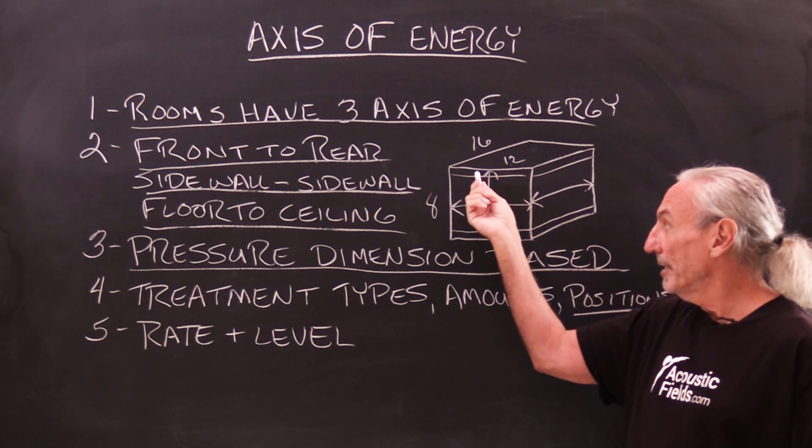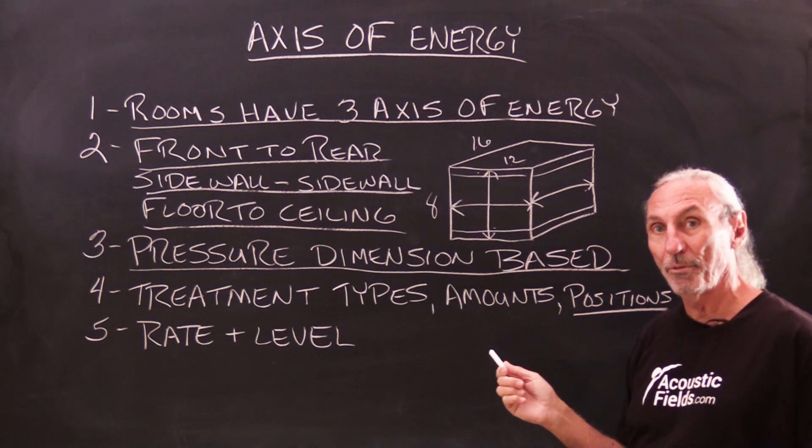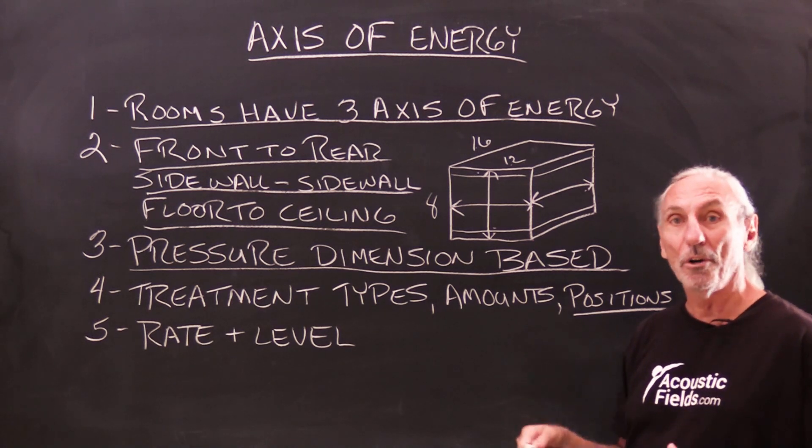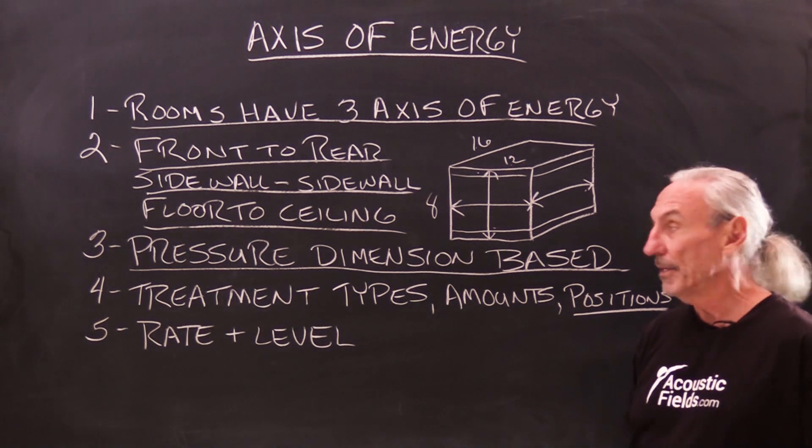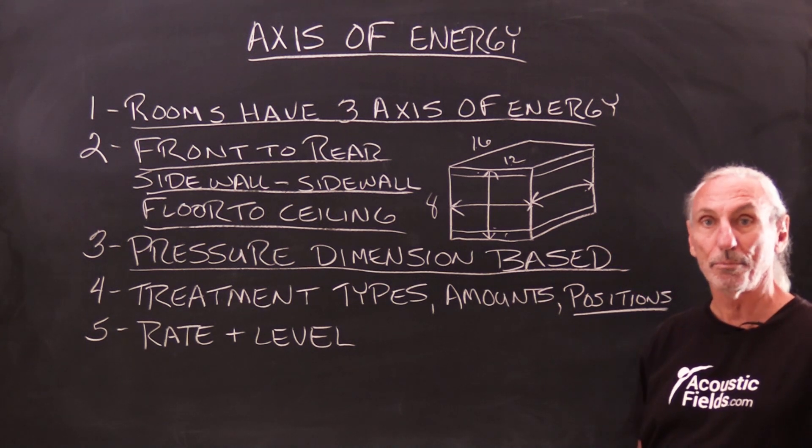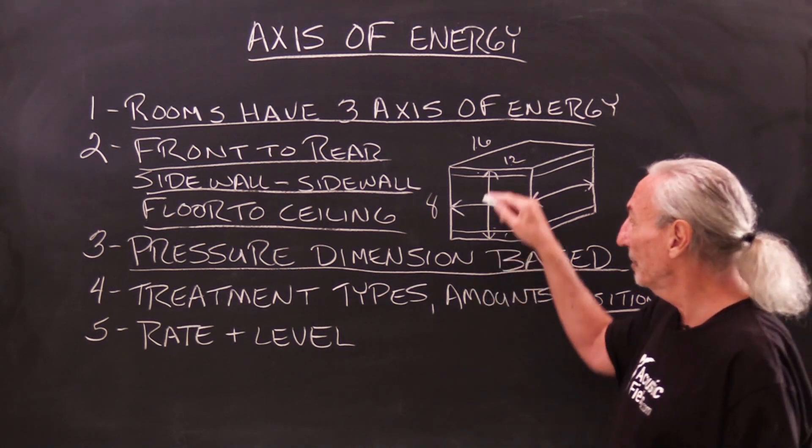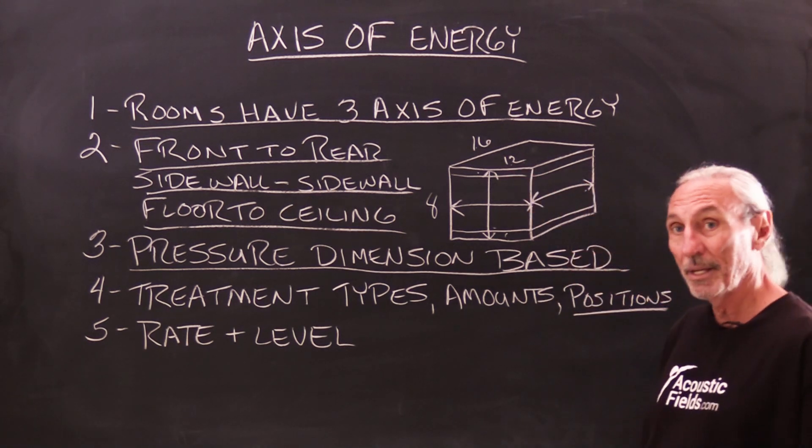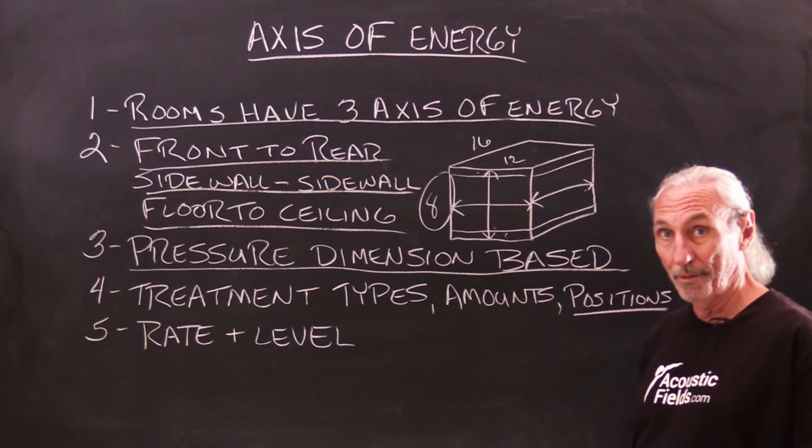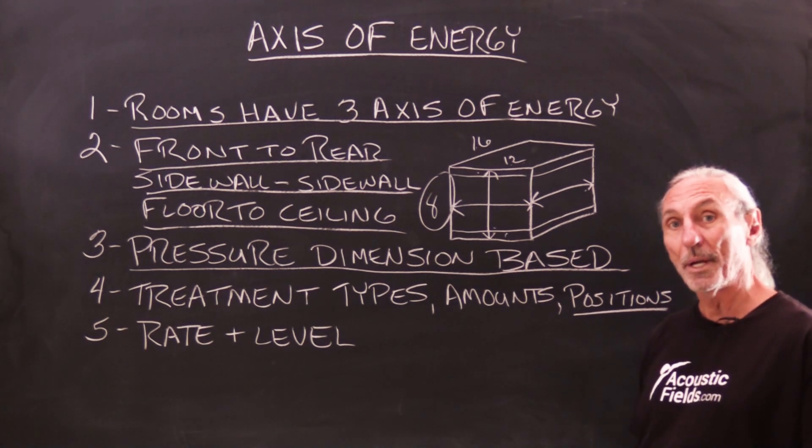In an ideal world you treat the ceiling and the floor. A lot of rooms can't install things on the ceiling that are heavy, so you can treat the floor. You can build platforms, put products on the floor. This is a dimension that people forget about, and they shouldn't because it's the smallest, usually, of the three. So it's going to create the most problems.